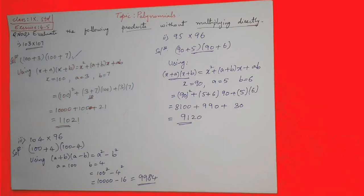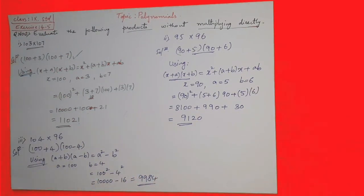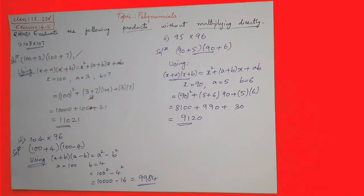So what we have done? First, we see which identity is applicable. Like here you applied identity x plus a into x plus b. Here you applied identity a plus b into a minus b. If you know the identity, then we can get the answer easily. Hope it is clear for you. If you have any doubt, you can ask in the comment section. Thank you.